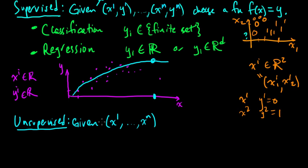So maybe here, typically, but not always, we might have x i in r k, or something. That's e.g. But it could be something more general, like a document, or a string of words, or something else more complicated.